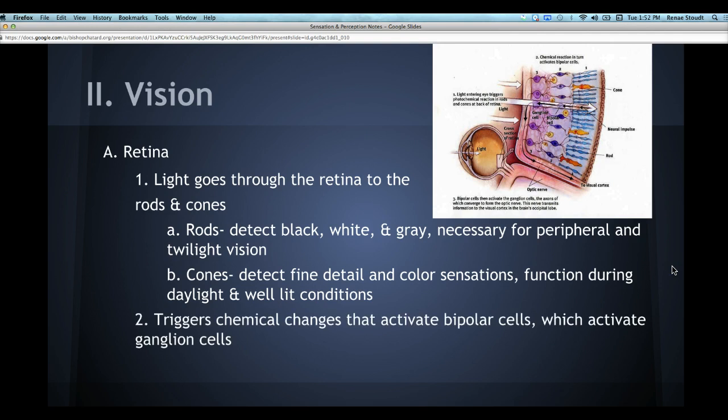And then, it's going to trigger these chemical changes that activate the bipolar cells, which activate the ganglion cells. The bipolar cells are these kind of dark purplish colors right here in the middle.